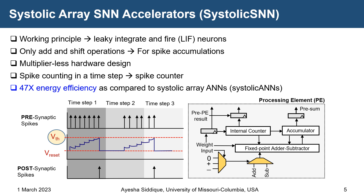Because SNNs follow leaky integrate-and-fire neurons, the systolic array hardware is built to follow this principle. Since SNNs don't have multiply operations, we have only add and shift operations in the processing element — an accumulator, fixed-point adder, subtractor, or internal counter. The internal counter counts the number of spikes in a timestamp. In the case of systolic SNNs, we can achieve 47x energy efficiency compared to systolic ANNs.